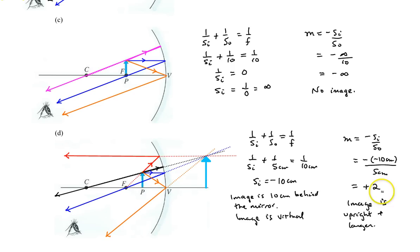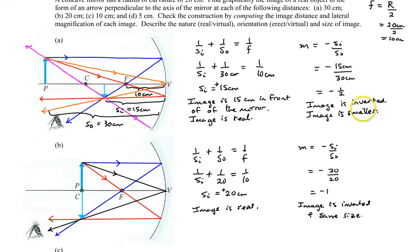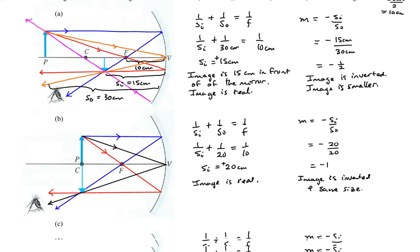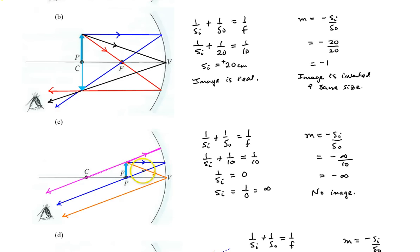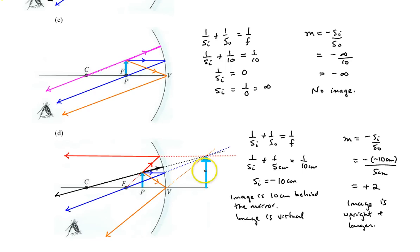And that is it for this example. To reflect on what we've covered: when the object is beyond the center of curvature, the image is always smaller, inverted, and real. When the object is right at the center of curvature, you get an equal-size, real, inverted image directly beneath it. When the object is placed at the focal point, you never get an image because it forms at infinity. And when the object is between the focal point and the vertex, you always get a virtual image that is larger and upright. From concave mirrors you can get both real and virtual images — which will be different from what we see with the convex mirror in the next example.